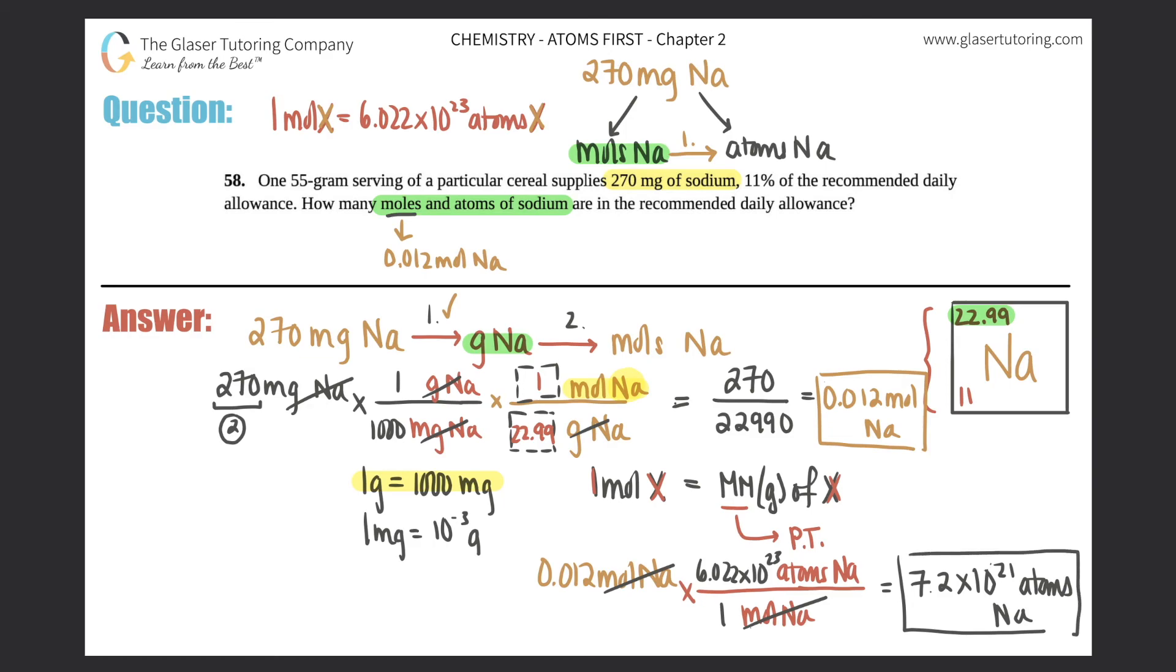That's the second answer. So that would be this answer. This for atoms is 7.2 times 10 to the 21st atoms of sodium. And there you go.